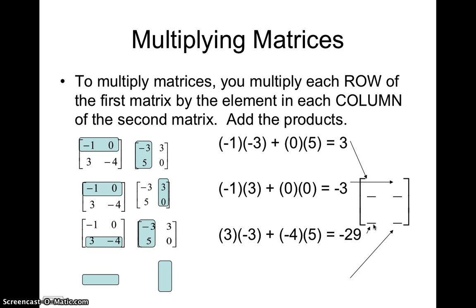One final time, row two, column two. We take the second row of matrix one, multiply each element by column two of matrix two. Three times three, plus negative four times zero is nine. And that will go right there in the second row, second column of our product. So our final answer will be three, negative three, negative 29, nine.